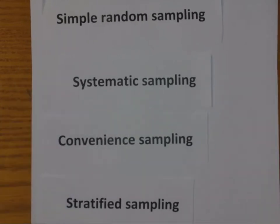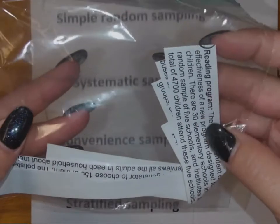What we do is we hand out baggies and they have these strips of paper in them that have different situations that we want you to examine as a group. We put you in groups of three to four people and we talk about what's going on in this particular sampling and what type is it.